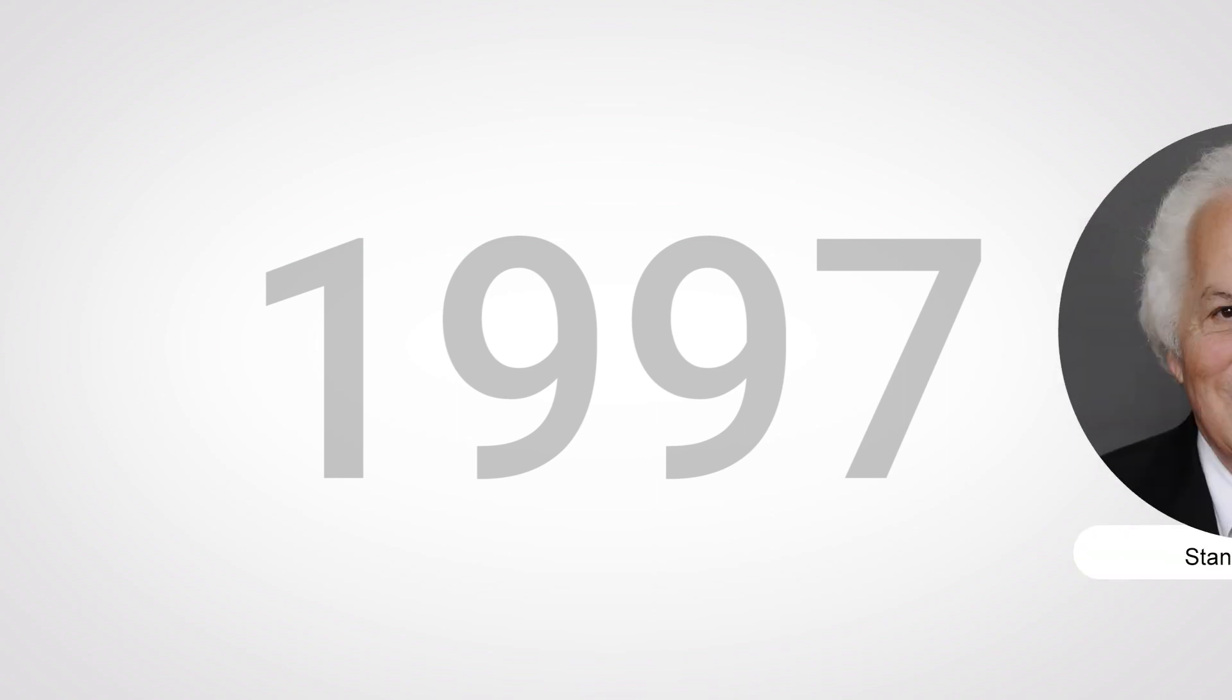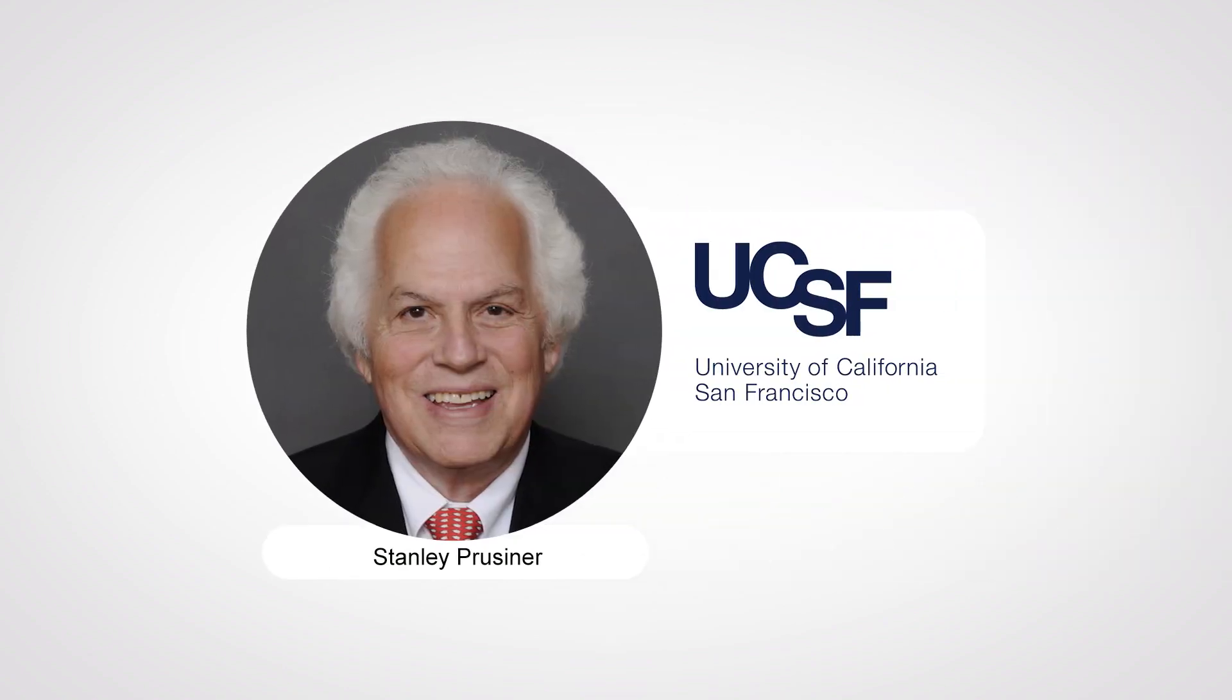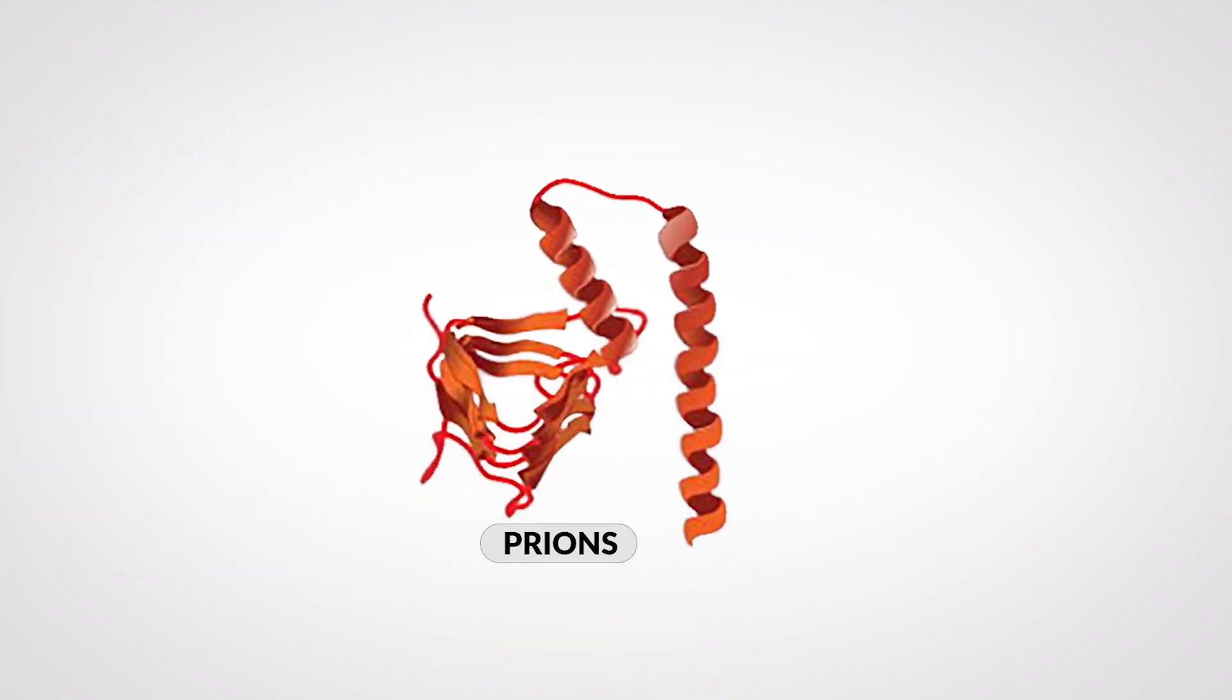In 1997, UCSF biologist Stanley Prusener won the Nobel Prize for describing zombie-like proteins called prions.